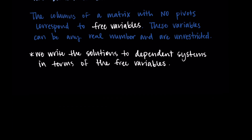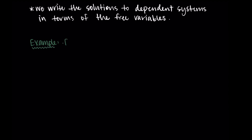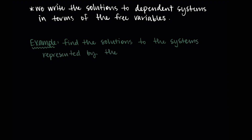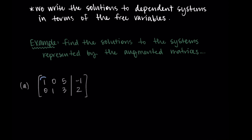Let's look at four examples where we solve systems represented by augmented matrices, identifying the basic and free variables. In all of these examples I'll use variables x1, x2, x3, and so on rather than x, y, z. I'm also assuming you have some experience solving systems from row-reduced matrices, so we'll focus on this new language — identifying basic and free variables and writing solutions more specifically.